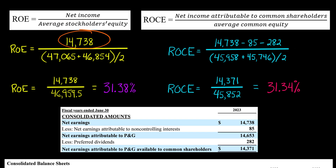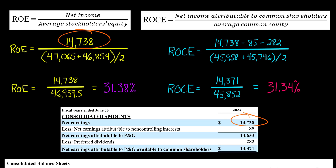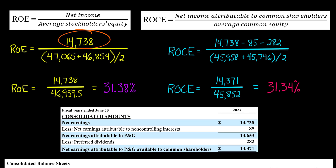So we've got the net income — that's this number right here — and then we're going to divide that by the average stockholder's equity. That gives us a return on equity, which in this case is 31.38%.